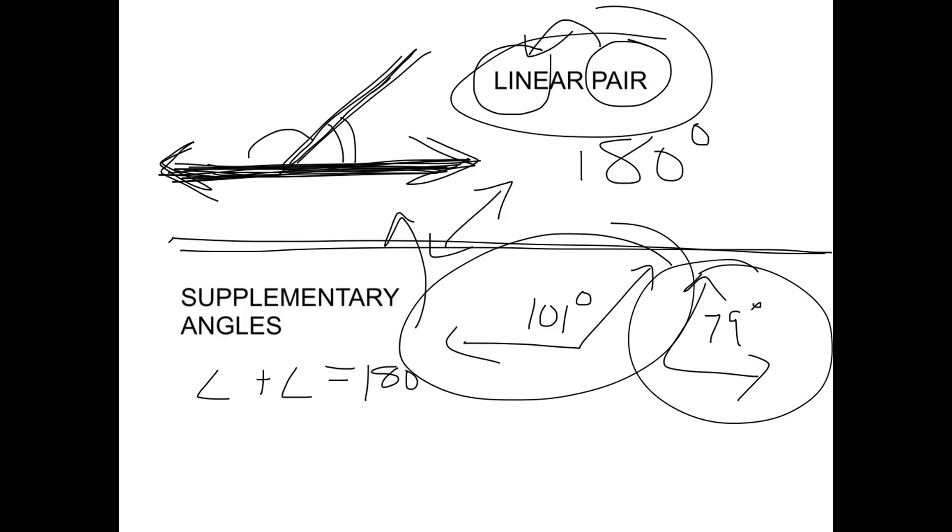They just have to add up to 180. They don't have to be adjacent, next to each other. Adjacent means right next to each other. So all linear pairs are supplementary, but not all supplementary angles are linear pairs. Remember, because that's a pair that makes a line. These would, if they were put together, make a line, but they don't have to be put together. So that's the difference.